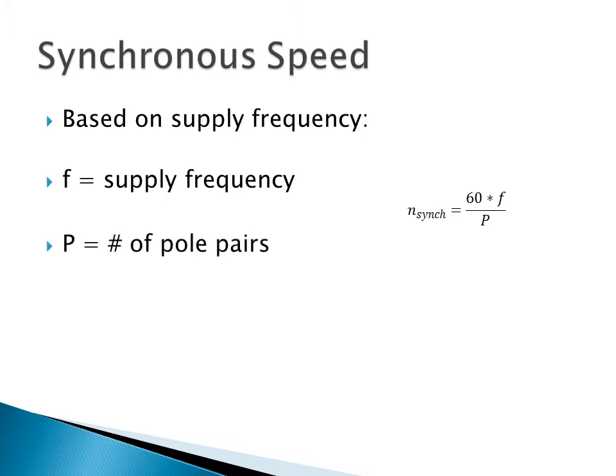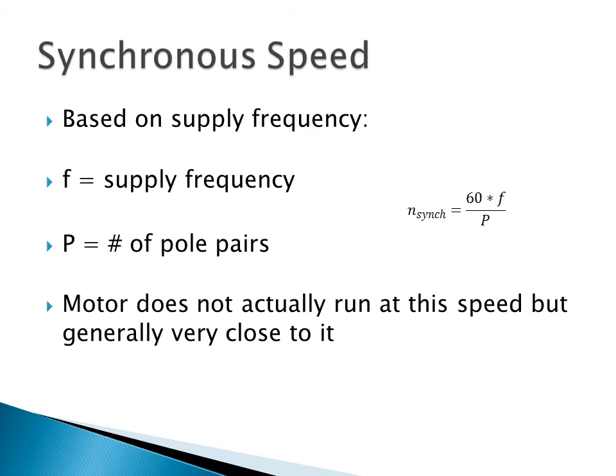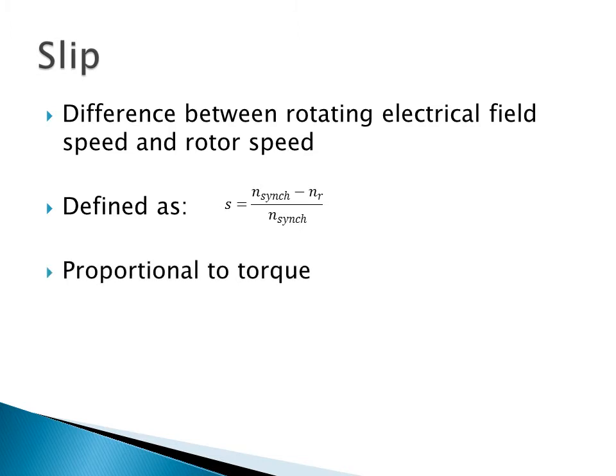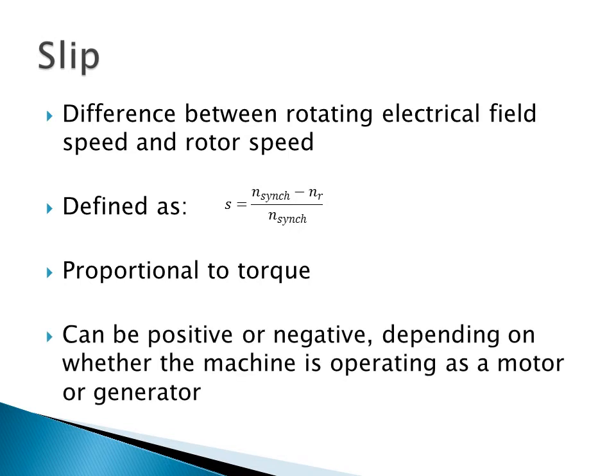Now, induction motors want to run at a synchronous speed, which is dictated by the supply frequency. They will, however, not actually run at this frequency. They'll run a little bit slower, depending on the load and how much torque there is applied to the motor. So, the difference between the rotating electric field speed and the speed of the rotor is called the slip. We can calculate it as the synchronous speed minus the rotor's actual speed divided by the synchronous speed. And it is generally proportional to torque when you're operating in the normal operating band of the motor.